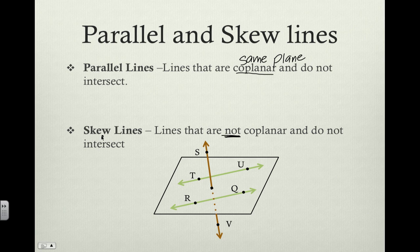Skew lines are very similar to parallel lines in that they do not intersect, but the main difference is that they are not co-planar — they do not lie in the same plane, whereas parallel lines will always lie in the same plane, and also they do not intersect.